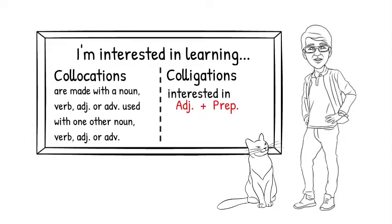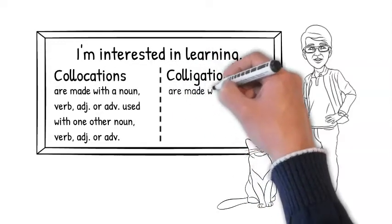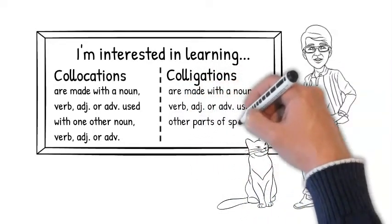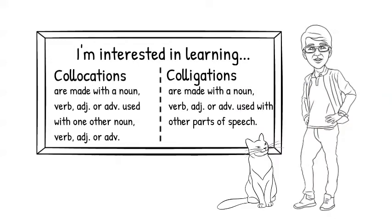Colligations are two or more words, but colligations are made with a noun, verb, adjective, or adverb used with other parts of speech, especially prepositions, like interested in.